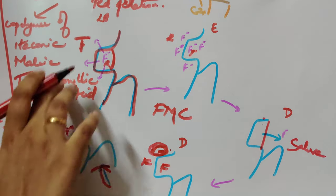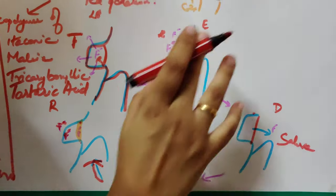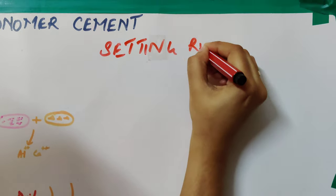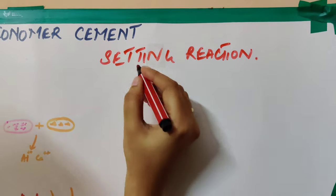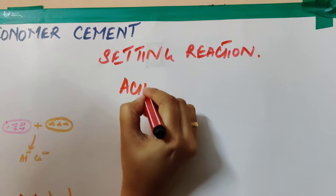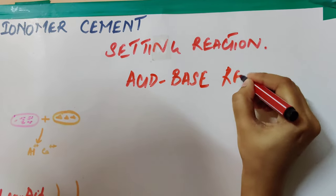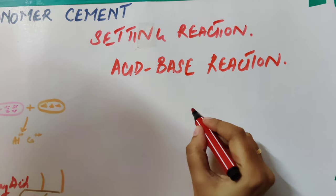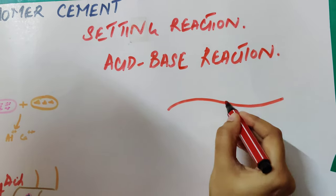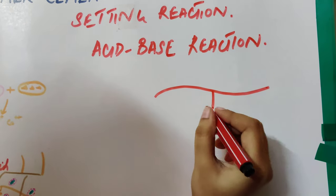Next, coming to the setting reaction of GIC. There is going to be an acid base reaction. First, what happens is that the liquid is going to contain a polyacrylic acid, that is the copolymer of acids. It is going to have a COOH group.